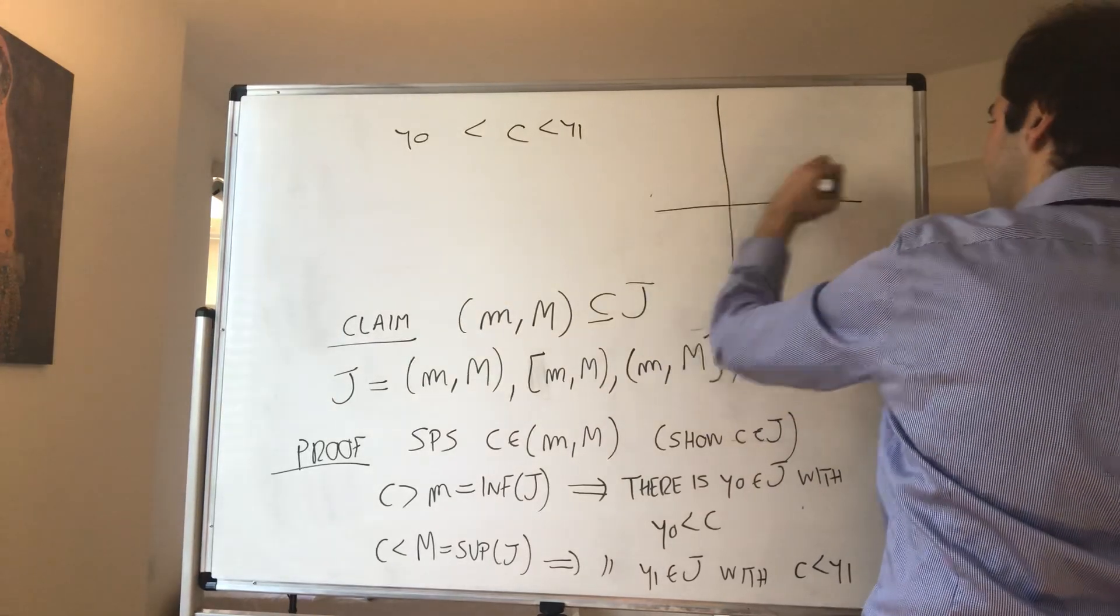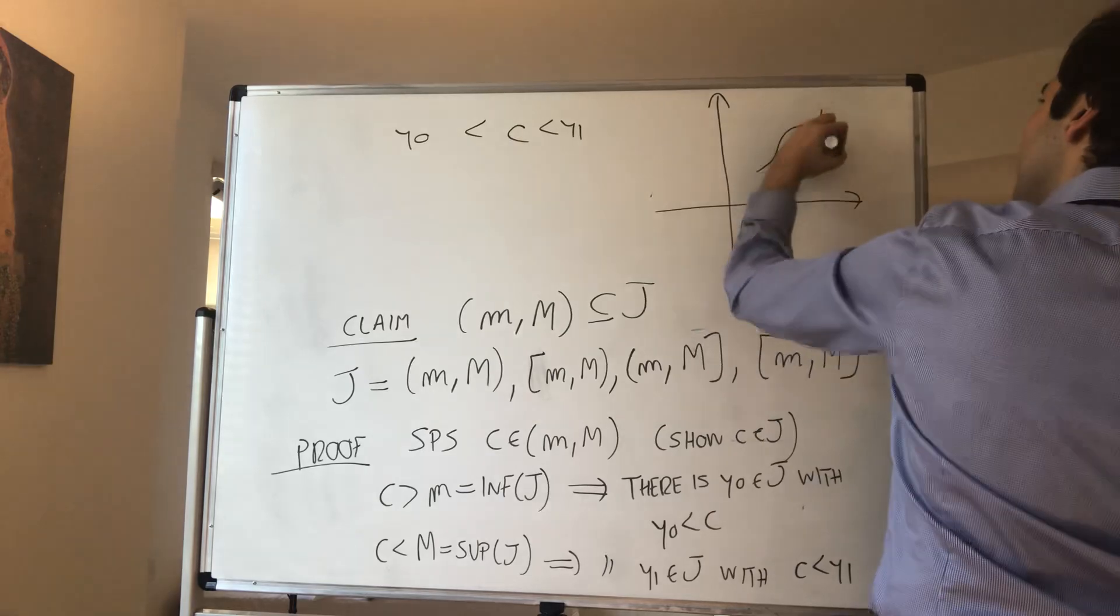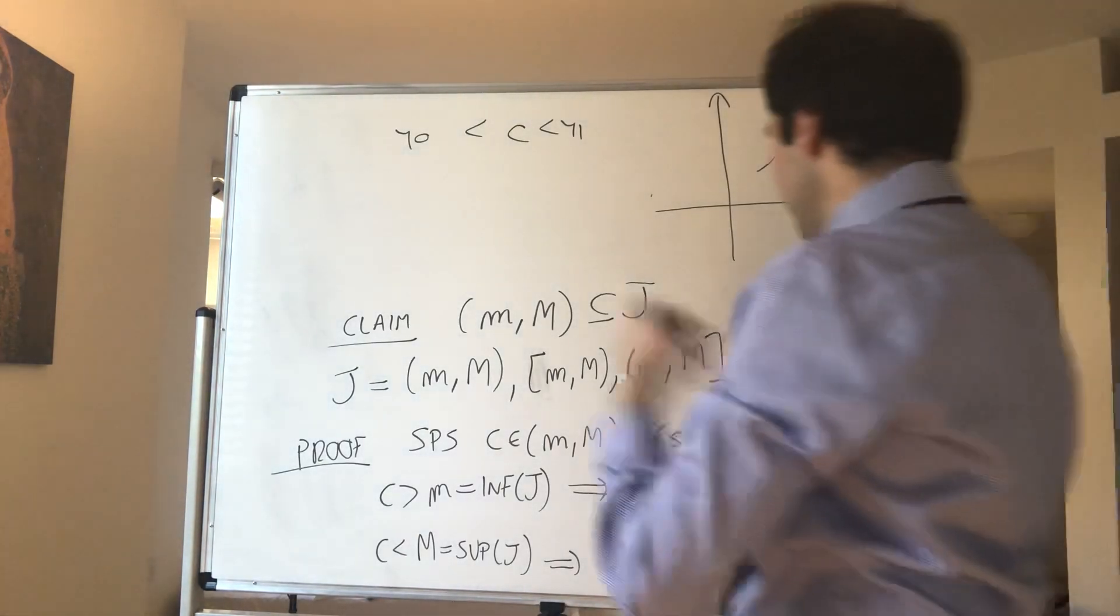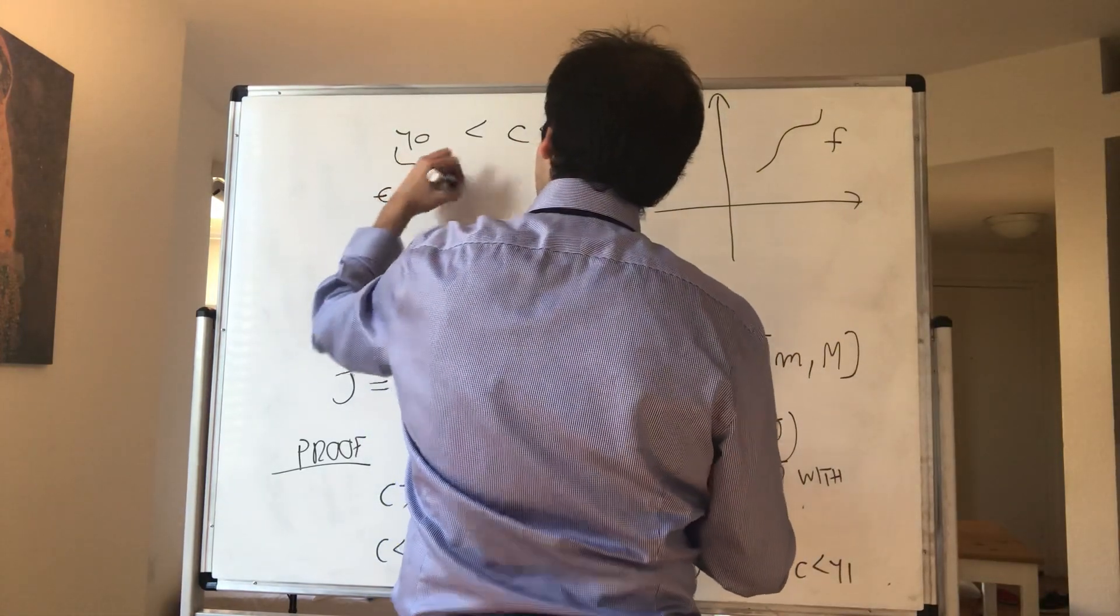So you're not the best student, so there's a student that's better than you. And therefore, combining both things, we get that c is between y₀ and y₁. Now what is happening? Remember, let's say you have this function here f.